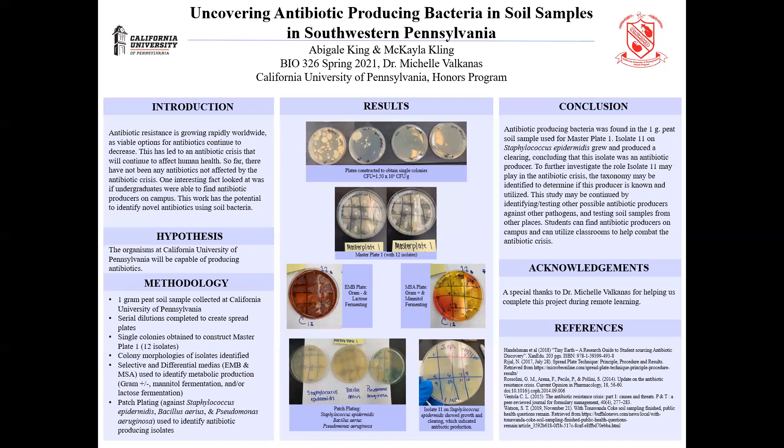As stated before, we did end up getting master plate one, shown in the second group of pictures — both views of master plate one from different viewpoints, since we could not go into the lab due to remote learning. Master plate one had 12 isolates placed on the agar plates and all 12 actually grew. Some groups did not have all 12 isolates grow, but our plate did.